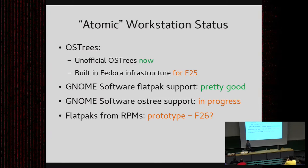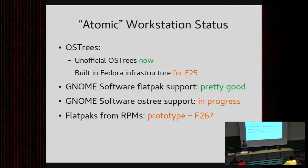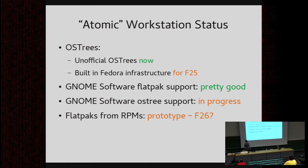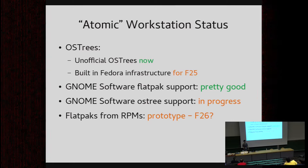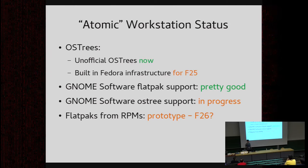You can get unofficial OS trees of Fedora right now, and we'll have more official ones built completely within the Fedora infrastructure for Fedora 25 this fall. Flatpak support in GNOME Software is pretty good. GNOME Software support for OSTree is still in progress — there are some initial steps but we still need to finish that. And the idea of creating Flatpaks from RPMs — we have some prototypes, and maybe in six months or a year we'll have that up and running.